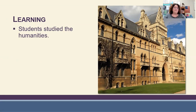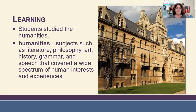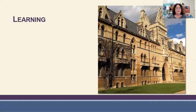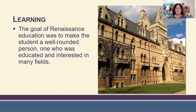Students of the Renaissance studied the humanities — things like reading, writing, and reasoning. These covered human interests and experiences: literature, philosophy, art, history, grammar, and speech. The goal of Renaissance education was to make the student a well-rounded person, one who was educated and interested in many fields.